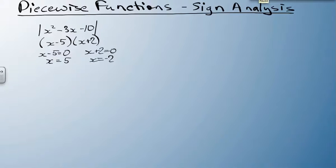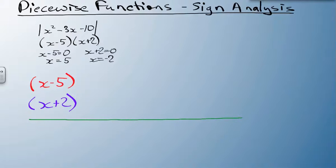Now that we know where each piece equals zero, we can start doing a sign analysis. I'm going to take each piece, x minus 5 and x plus 2. We're going to put a number line, and we know that something happens at minus 2 and we know that something also happens at 5.